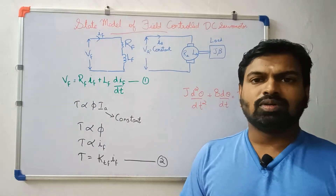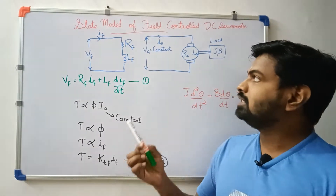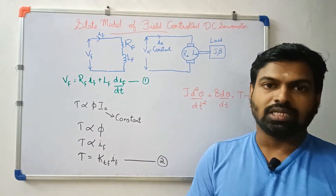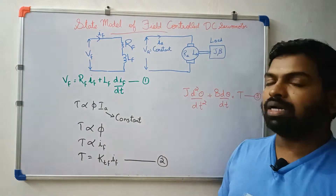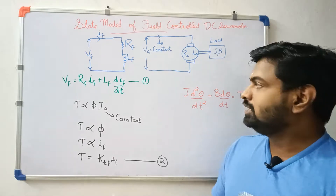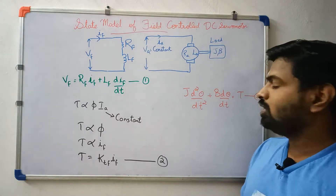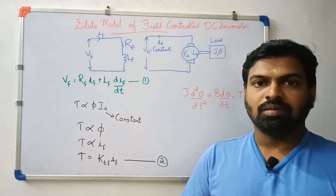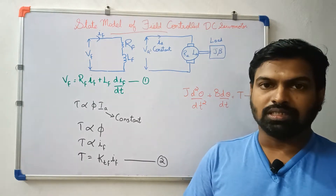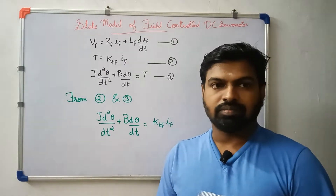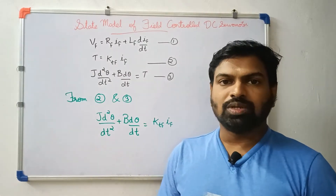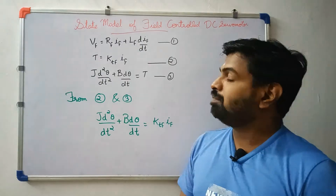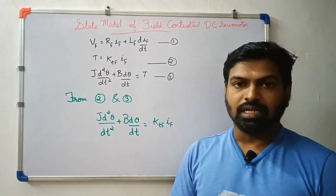The third equation is that we have the armature control DC servomotor. The motor load part is: j·d²θ/dt² + b·dθ/dt = T. Then the field circuit equation is: Vf = Rf·if + Lf·(dif/dt). That is the equation.